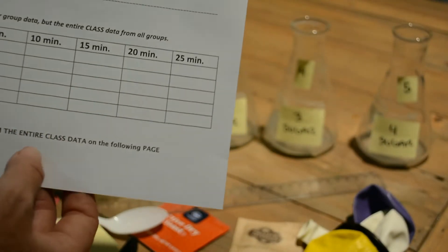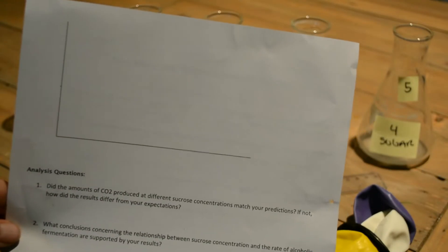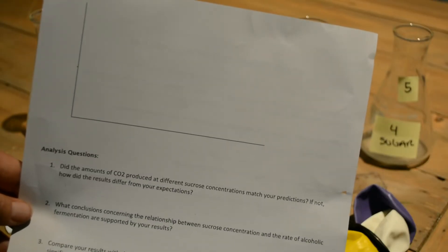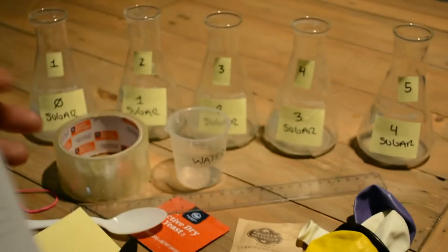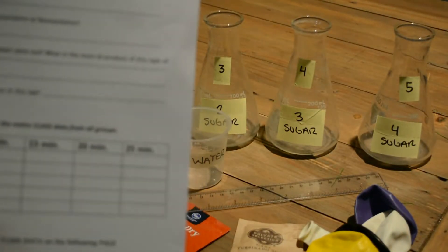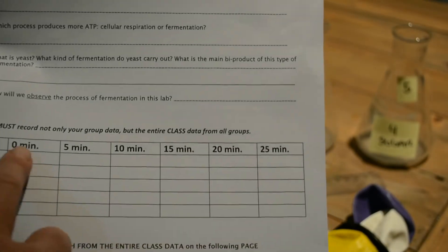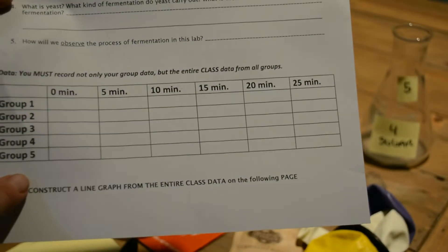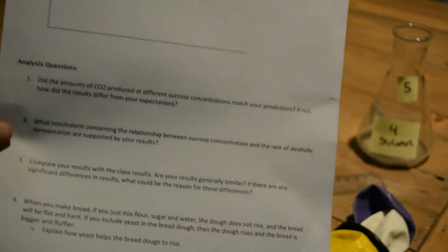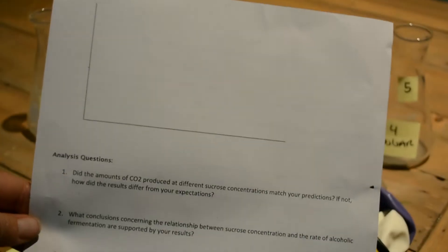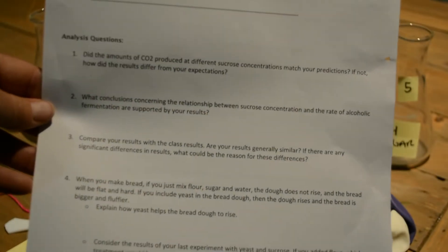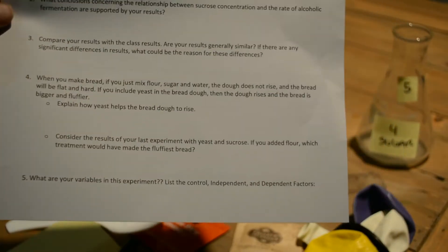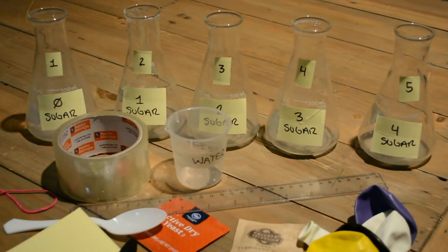When you're done with the data table, you're going to construct a graph on the opposite side. Because this is honors biology, you'll need to figure out how to do that on your own. The hint is that this is over time — from zero to 25 minutes consecutively — and we have five different groups. The graph needs to be hand drawn, not digital. Then answer all the analysis questions and turn it into Canvas when finished.